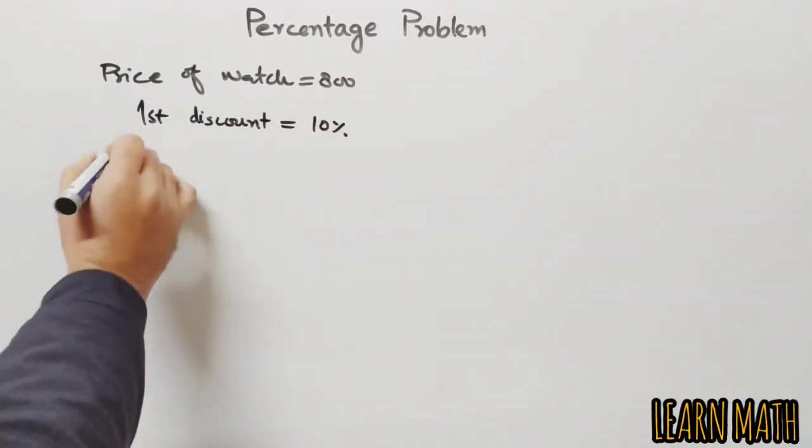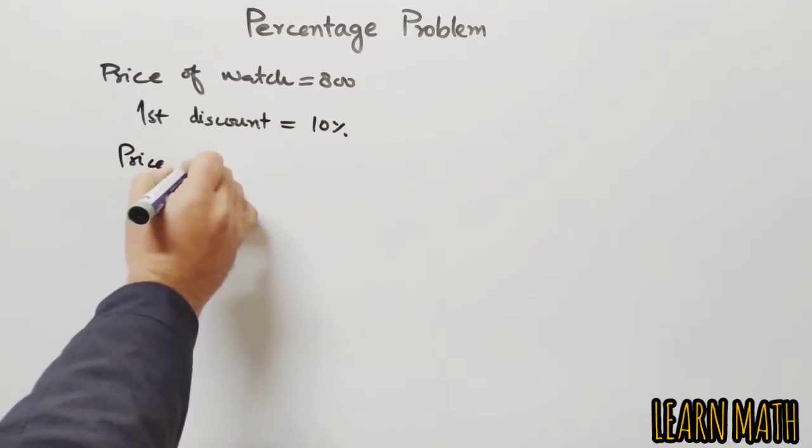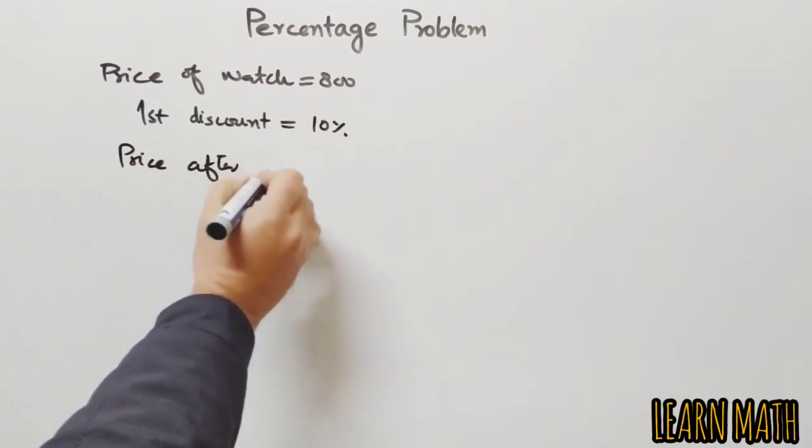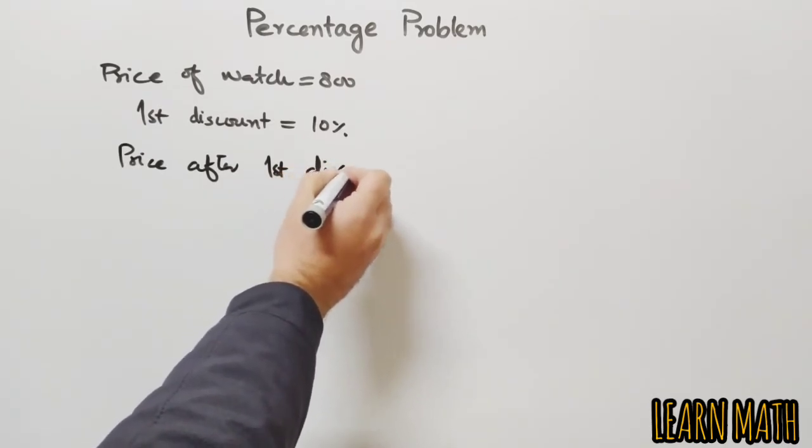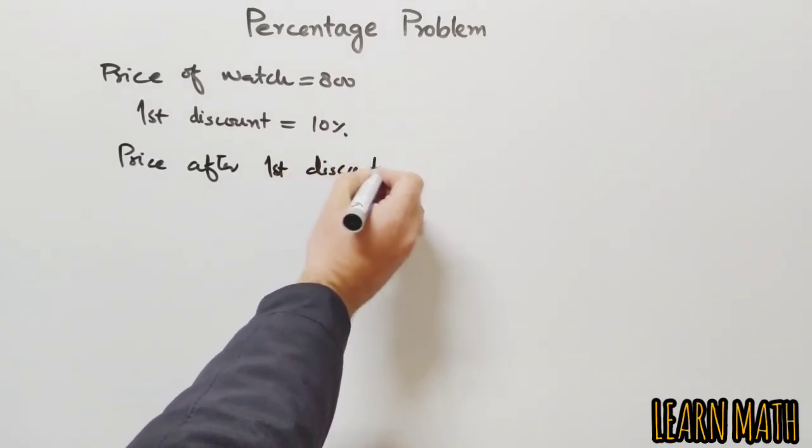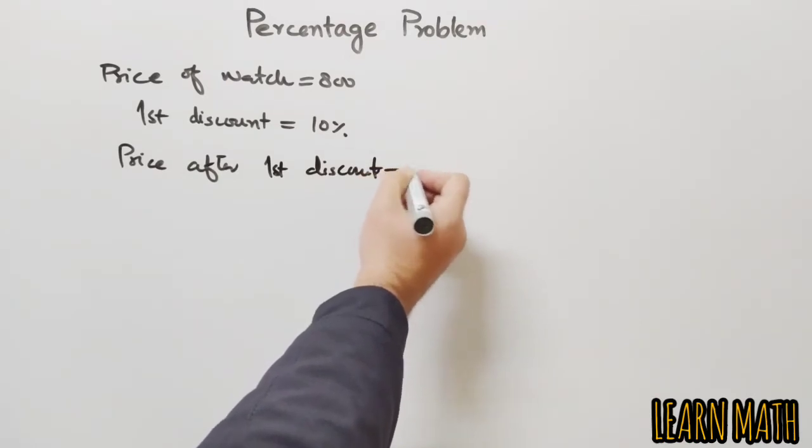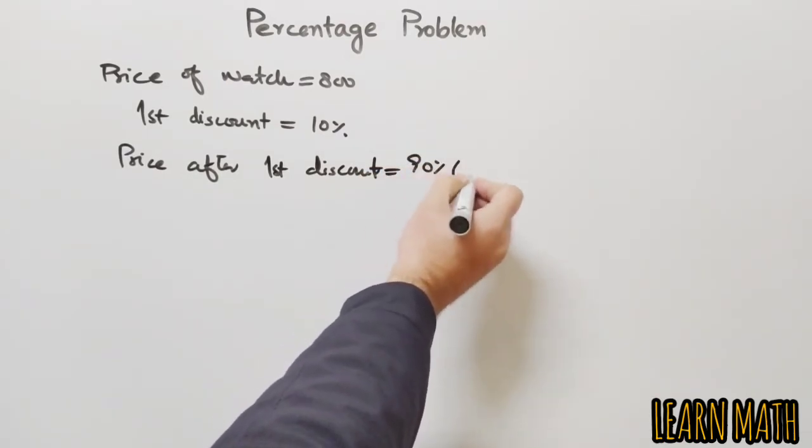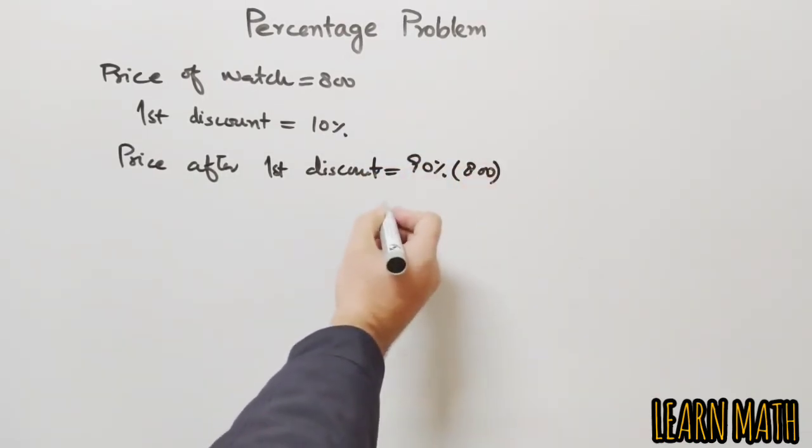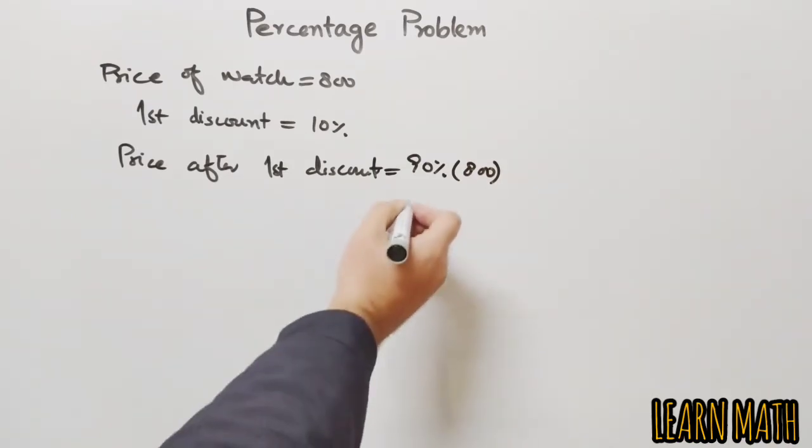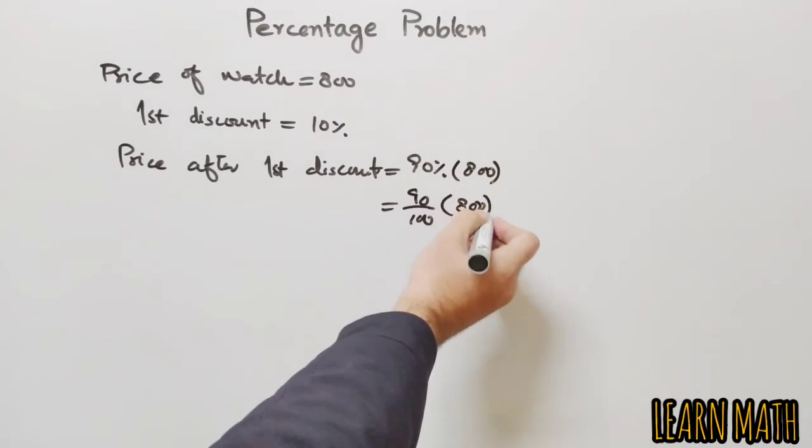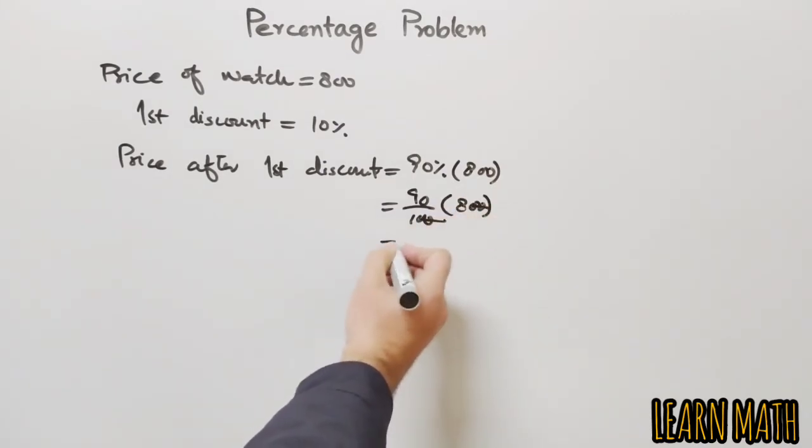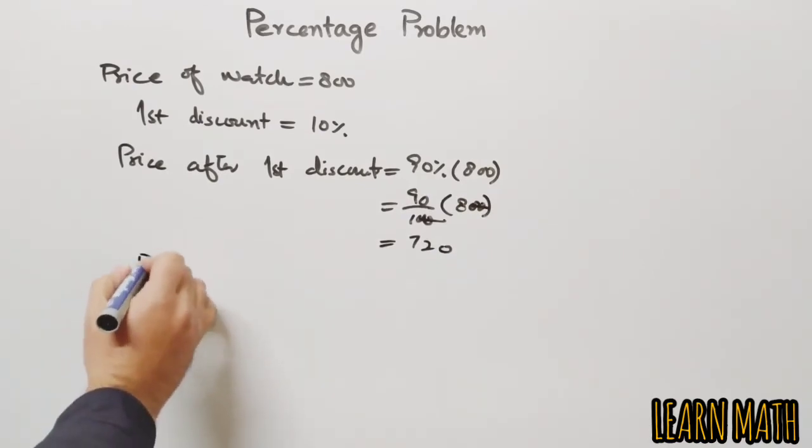So after the first discount, the price of the watch will be: price after first discount equals 90% of 800. 90% of 800 we can write as 90/100 times 800. We will simplify this and we will get 720. This is the price after the first discount.